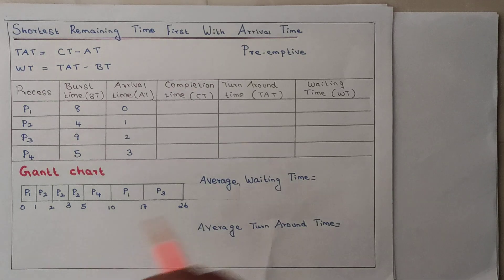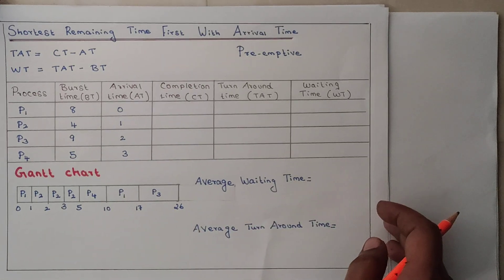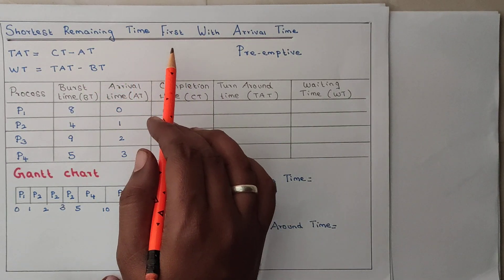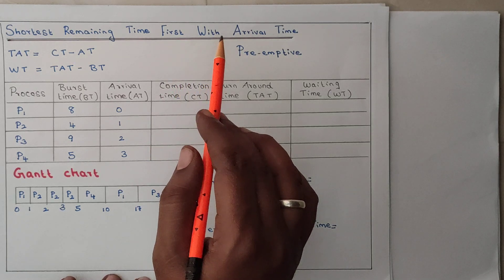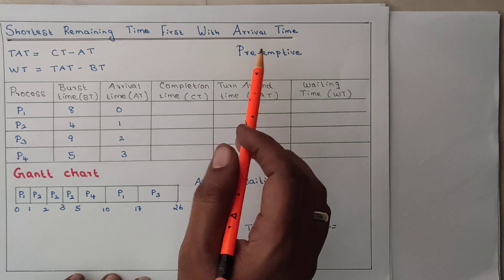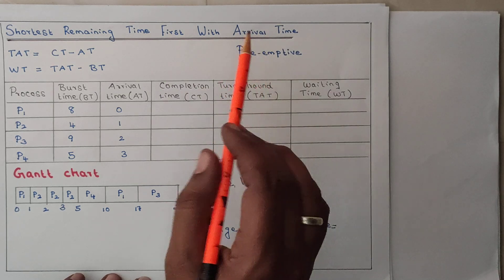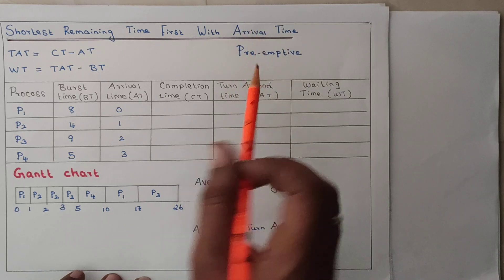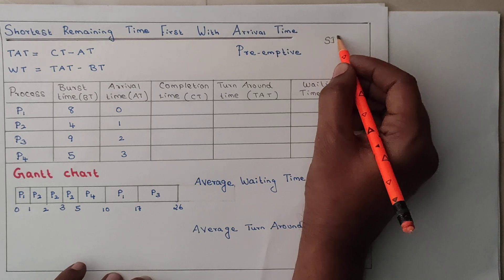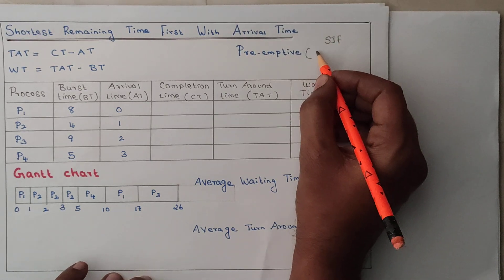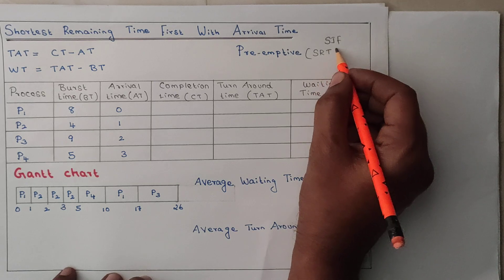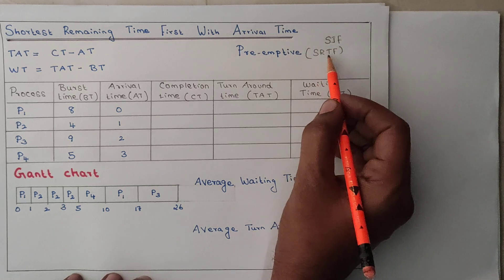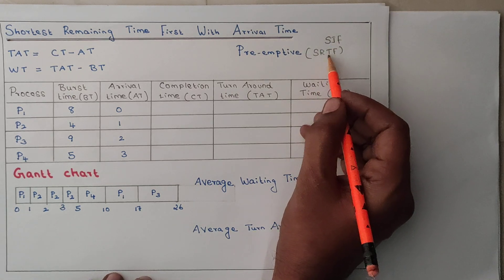Hello all. The next topic is Shortest Remaining Time First algorithm. Shortest Job First can be done in a preemptive way and non-preemptive way, with respect to arrival time and without respect to arrival time. If it is in a non-preemptive way, the name is SJF. If it is in a preemptive way, the name is Shortest Remaining Time First — SRTF is preemptive way.